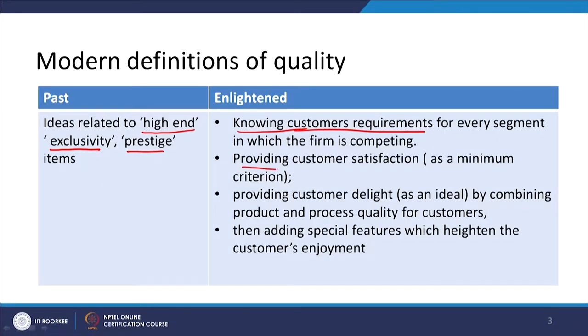You need to understand what different types of customers require in different segments and accordingly develop your products. That is the first fundamental thing to know about quality — that is what is known as the enlightened view of quality. Then, once you understand customer requirements of each segment, the minimum thing we need to do is to provide customer satisfaction. That is the bottom line, that is the minimum criteria.